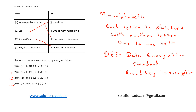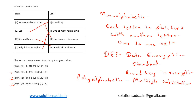Option D is polyalphabetic cipher. It uses multiple substitution alphabets, creating a more complex relationship. There can be a one-to-many relationship with polyalphabetic cipher, so D can be mapped to two.